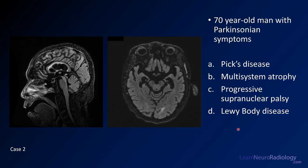Case two: the history is a 70-year-old man with Parkinsonian symptoms. Here you have a sagittal FLAIR and an axial FLAIR. Your choices are Pick's disease, multisystem atrophy, progressive supranuclear palsy or PSP, or Lewy body disease.